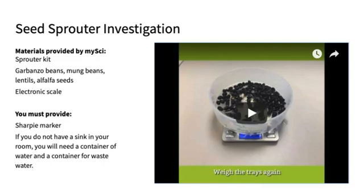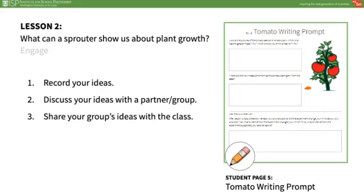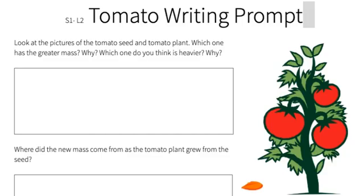After you get your experiments set up and the routine you would like to use for data collection, you can start another lesson and collect data at the beginning portion of your lesson. In the engage portion of this lesson, students will consider which is heavier — a tomato seed or a tomato plant — then determine where the new mass of the plant came from. Have students complete the tomato writing prompt on student page 5. After students have had a chance to record their ideas, they should discuss their ideas with a partner or small group, then share out loud as a class.